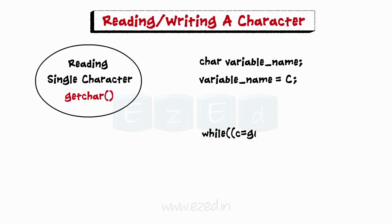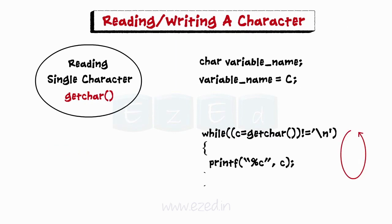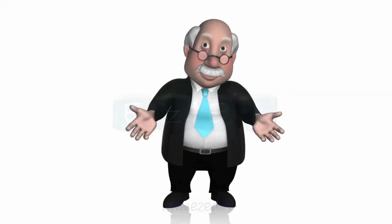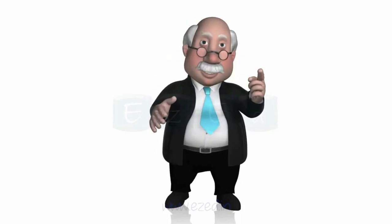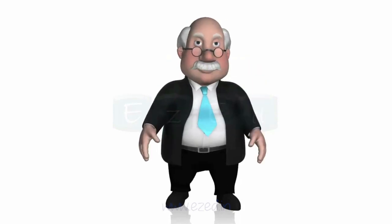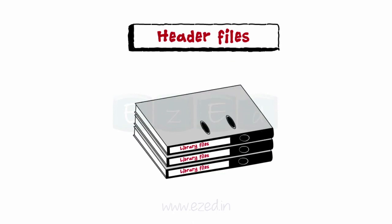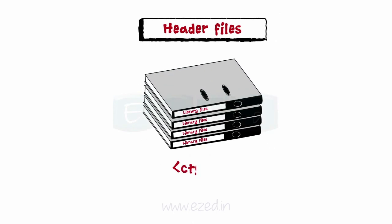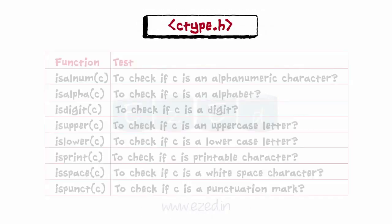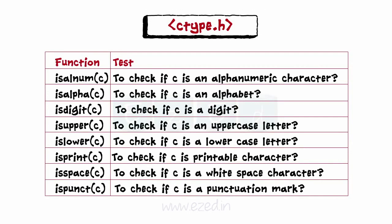We can also use the getChar function successively to read a character string. Moving on to ctype.h header file: C supports a number of library functions all grouped together in the header file named ctype.h. Various functions are available within it.